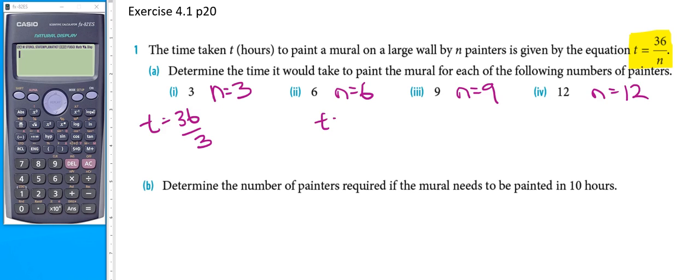In our second case, t equals 36 divided by 6. In our third case, t equals 36 divided by 9. And in our fourth case, t equals 36 divided by 12.